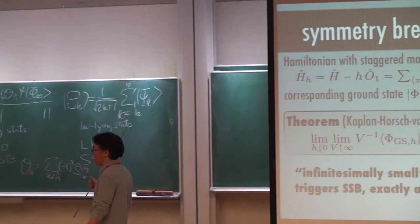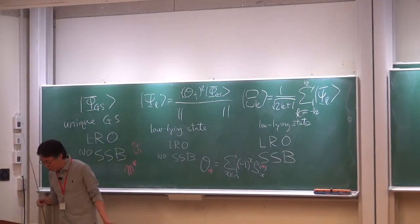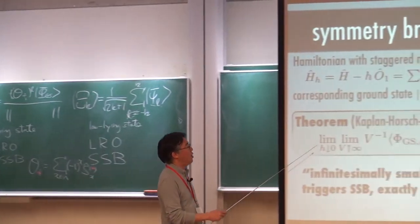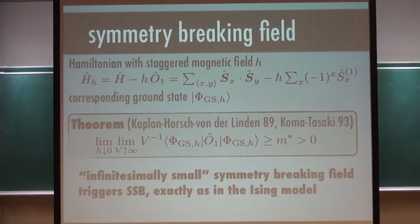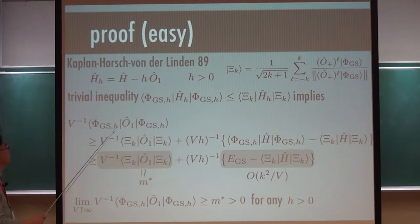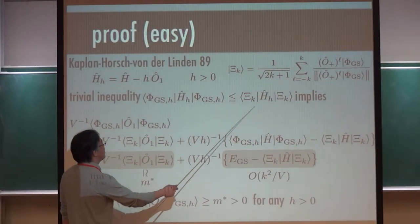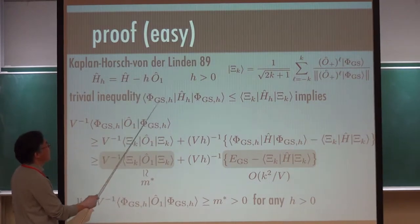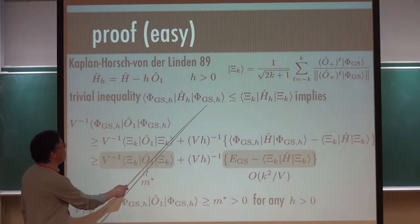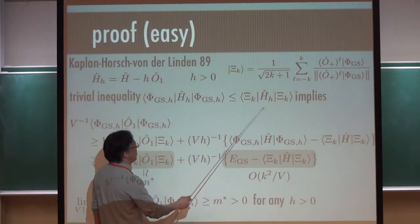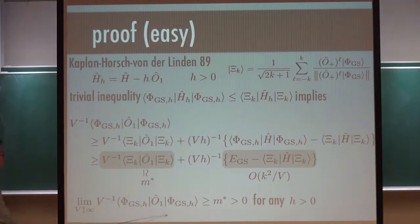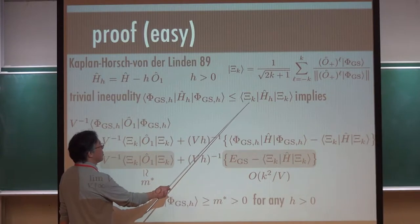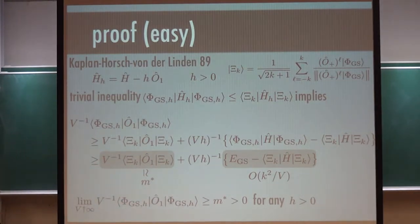The proof of this is very, very simple, but I don't have time to go into that. It's only based on a very trivial inequality. So psi-ground-state-H is the exact ground state of H_H. If you take any psi here, of course this energy is larger. Simply by rewriting this, you get the result. The most important thing here is that in this trivial inequality, I took this psi_k which does the job.